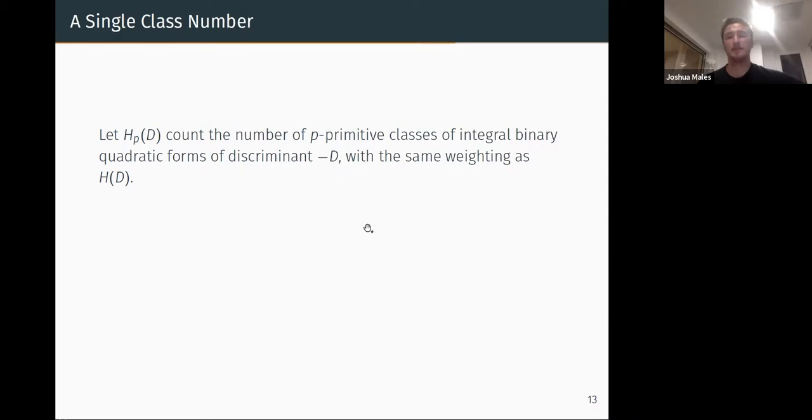So in terms of a single class number, we let H_p count the number of p-primitive classes of integral binary quadratic forms. So what does that mean? Here p is some prime. Means that prime p does not divide all of the coefficients of a quadratic form. So if q is abc, some quadratic form and p does not divide their gcd, and it comes with the same weighting as a normal class number. Then for every n we have this I think quite beautiful formula: the number of self-conjugate 7-cores is just up to some factor the number of 7-primitive binary quadratic forms of some discriminant depending on n.